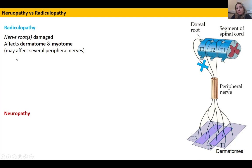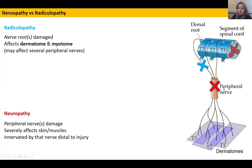As a result, a radiculopathy can affect several peripheral nerves, because as you know a nerve root can contribute to several peripheral nerves. Whereas neuropathy involves damage to a peripheral nerve — everything innervated by it will be affected, and that may include several dermatomes and myotomes.